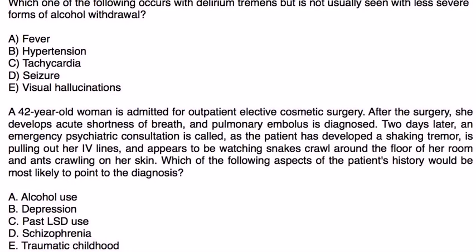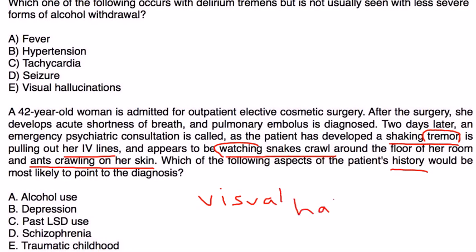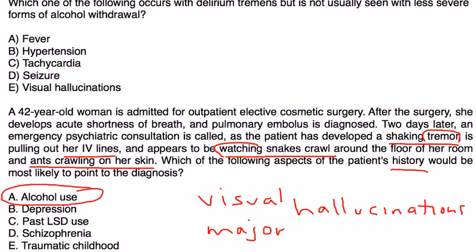A 42-year-old woman admitted for outpatient elective cosmetic surgery develops acute shortness of breath and a pulmonary embolus is diagnosed. Two days later, an emergency psychiatric consult is called as the patient has developed a shaking tremor, is pulling out her IV lines, and appears to be watching snakes crawl around the floor. Tremor and visual hallucinations point to the major level — the second level of severity — of alcohol withdrawal, so she most likely has a history of alcohol use.